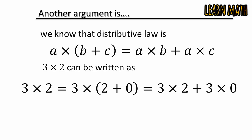This equals 3 × 2 + 3 × 0 according to the distributive law, and this is only possible if 3 × 0 is 0. Then the two sides will be equal.